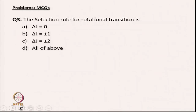The next question asks for the selection rule for rotational transitions. The four options are: ΔJ = 0, ΔJ = ±1, ΔJ = ±2, or all of the above. We have already discussed this in our previous lecture. The selection rule for rotational transition is ΔJ = ±1, so the answer is B.